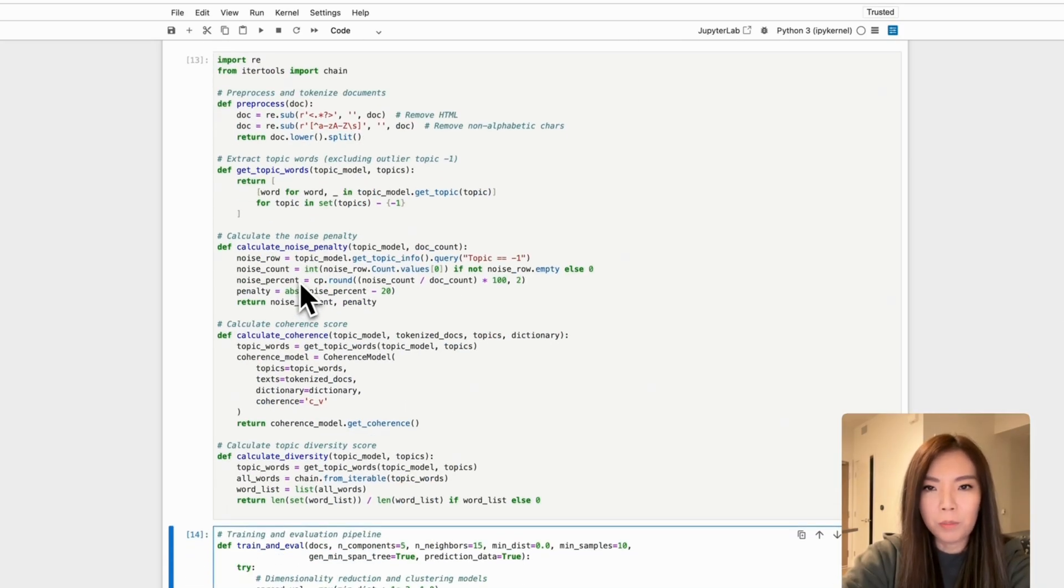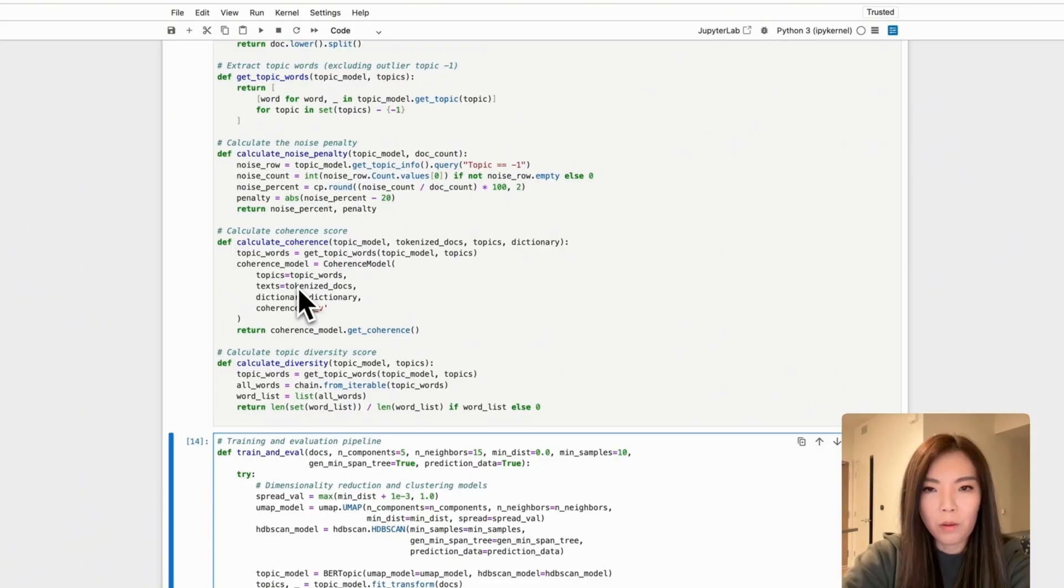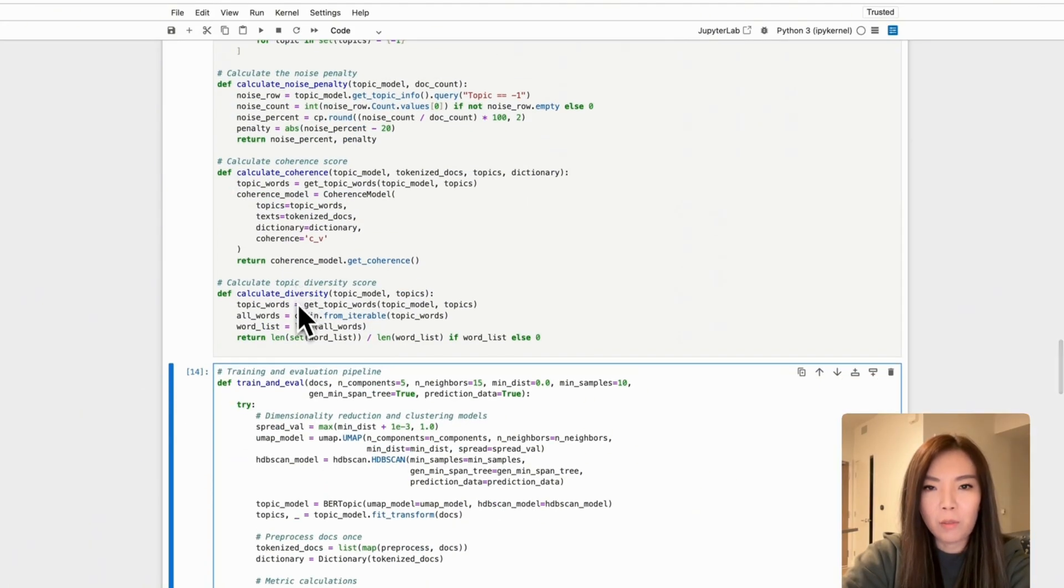Calculate_noise_penalty calculates the percentage of documents assigned to the noise cluster and computes a penalty score if it exceeds a threshold of 20%. It penalizes models that produce too many noisy clusters. Calculate_coherence measures how thematically meaningful the topic words are. Calculate_diversity assesses the uniqueness of words across topics. High diversity indicates less repetition, leading to richer topic modeling.